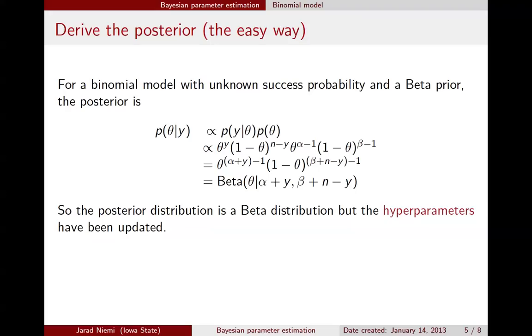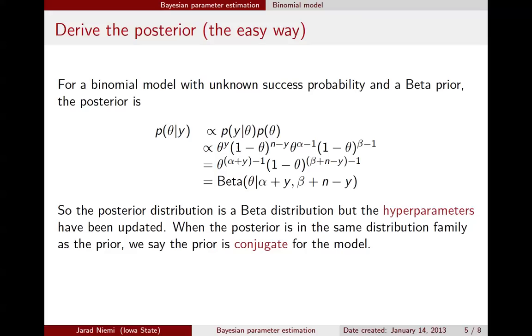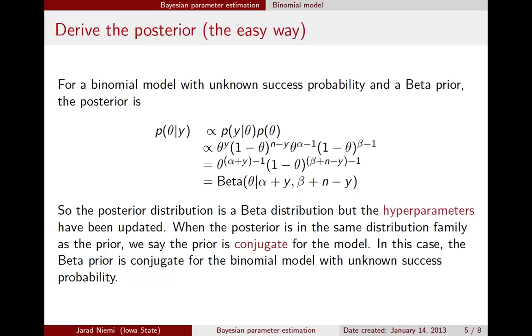Right, so in the prior, the hyperparameters were just alpha and beta. Now it's alpha plus y and beta plus n minus y. And when the posterior is in the same distribution family as the prior, we say that the prior is conjugate in this model. So more specifically for this particular model, we would say that the beta prior is conjugate for the binomial model with unknown success probability. Just to reiterate, conjugacy is a property of a prior and a model where the prior has the same family as the posterior. The advantage of a conjugate model is that it's analytically tractable. Right, there's no computation that's necessary. Later we'll see situations where you have non-conjugate models and then you need to do some type of computation.